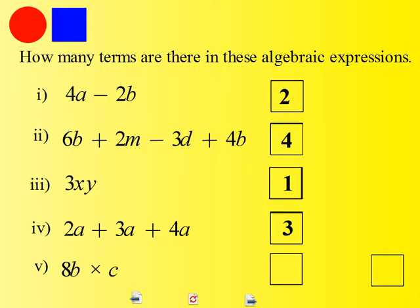And lastly, 8b times c. It's a mistake of thinking that we have two terms here, but in fact, no, we have only one. Because we said that a term is separated from another term by a plus sign or a minus sign. And in fact, algebraically speaking, this 8b times c, later on when we learn a bit more algebra, we could have even just written that as 8bc.